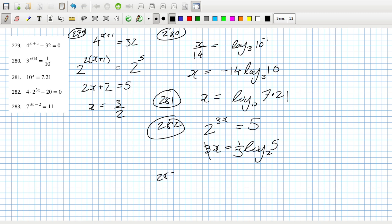And 283, I can get 3x minus 2 equals log base 7 of 11. So that means x equals two plus log base 7 of 11, all over three. Interesting, they write the answer a little bit differently. I think that's kind of interesting. I wonder if it works out to be the same. Should do. Two plus log base 7 of 11 over three, that's roughly 1.077.